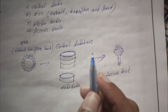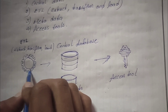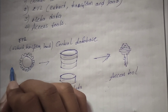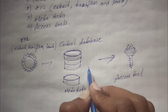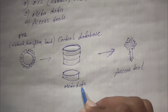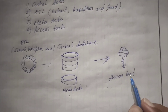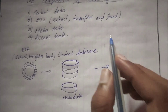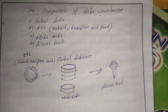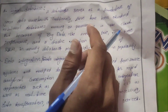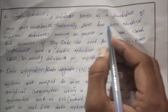Let us look at the diagram. Here is ETL — it extracts data from the source — and here is the central database, metadata, and access tools. Let us discuss briefly about each of the four components of the data warehouse.